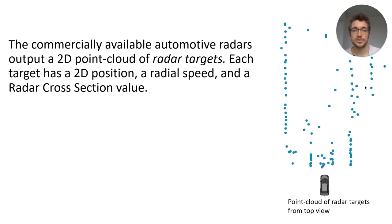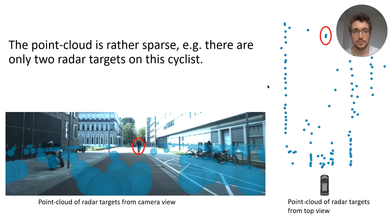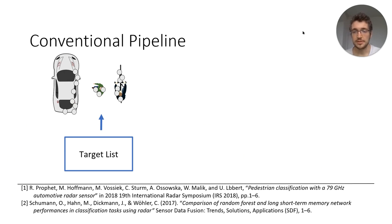A commercially available automotive radar outputs a 2D point cloud of radar reflections, or also called radar targets. Each of these targets has a 2D position, a radial speed, and a radar cross-section value, also called RCS. You can see a top view of such a point cloud here on the right, and the same point cloud projected to the camera view here on the left bottom. These point clouds are rather sparse. For example, this bike just next to my head has only 2 reflections.